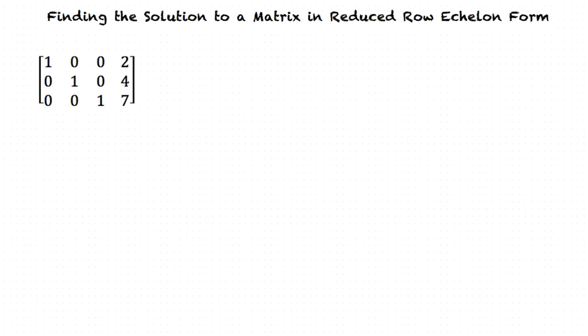This matrix is written in reduced row echelon form and can now be solved. Okay, I see that it's written in matrix form, but now what do I do with it?